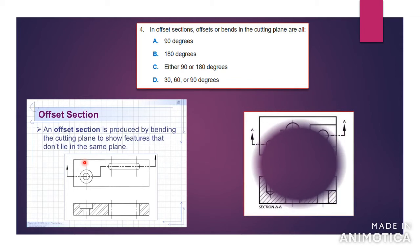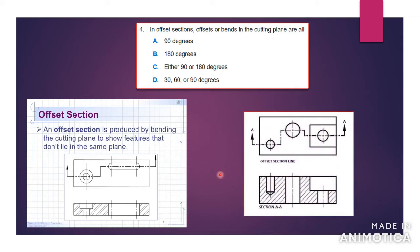The answer is 90 degrees. Here you have another example of an offset section where you start here, take the bend or make the offset which is 90 degrees, come across 90 degrees again, and then go across. This will show the different holes that are in this object and how it works. If you look at this section, it would look like they are all in the same plane, but they have three different planes that are used to show the information very clearly.